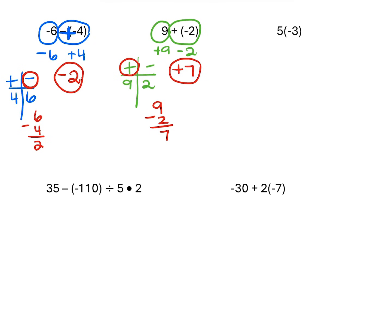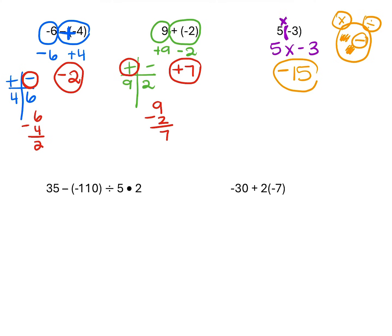My next problem says five parentheses negative three. Anytime a number sits right next to a parentheses, that means multiply — so this is really five times negative three. When we're multiplying, we use our integer man strategy. Integer man is only used when multiplying or dividing. I have a positive five and a negative three, which means the answer is negative fifteen because five times three is fifteen. Remember: if it's add and subtract, you make a table; if it's multiply and divide, you use integer man.